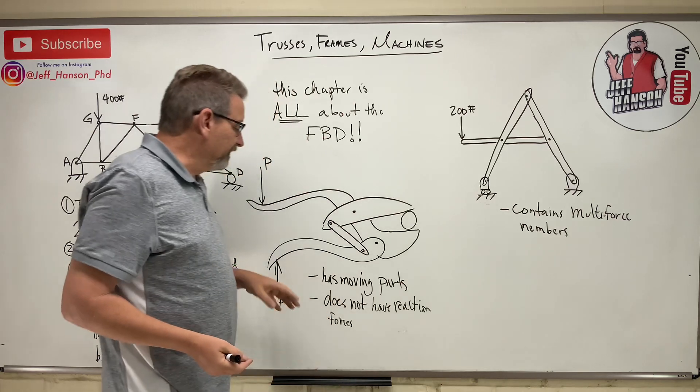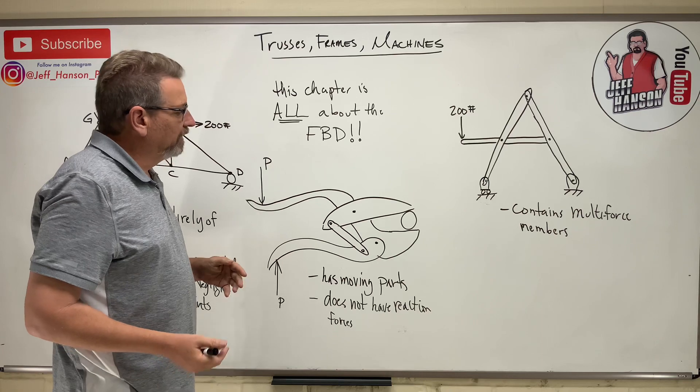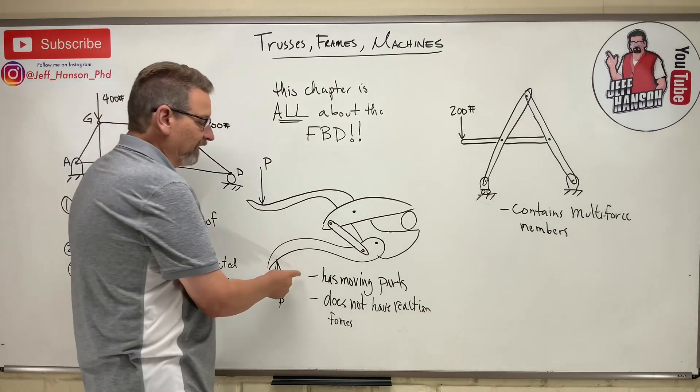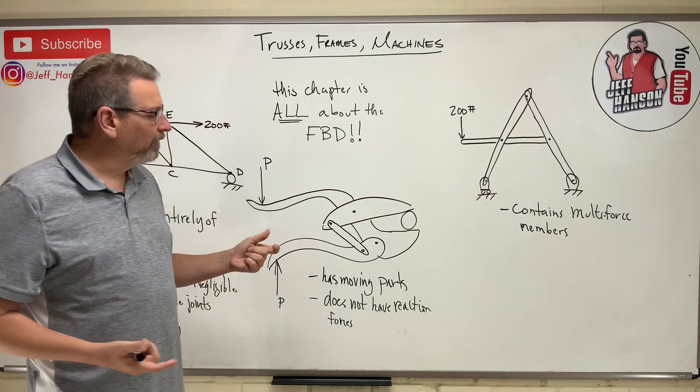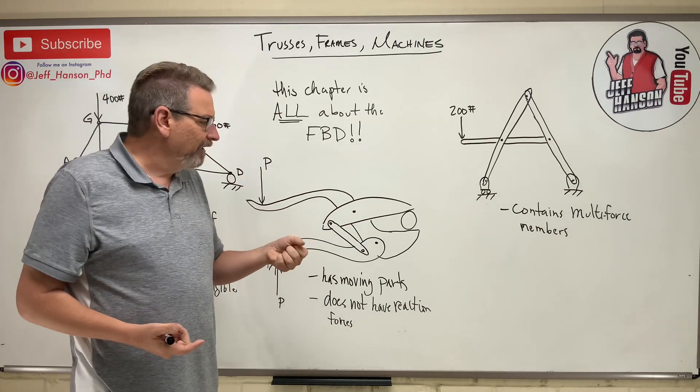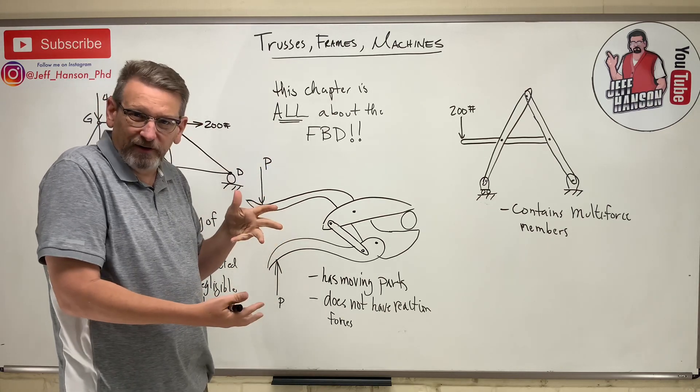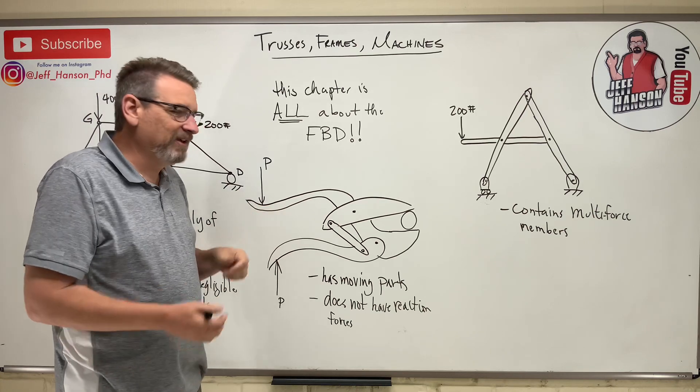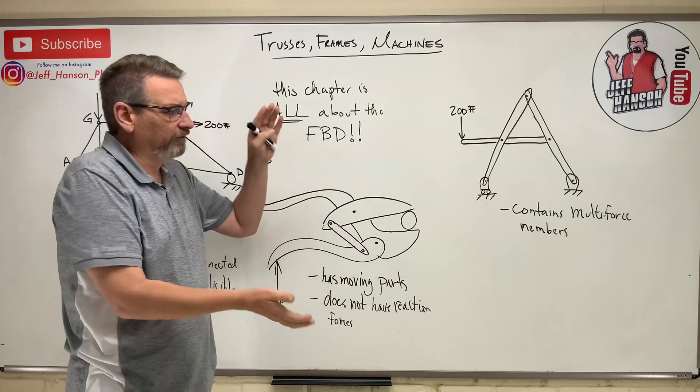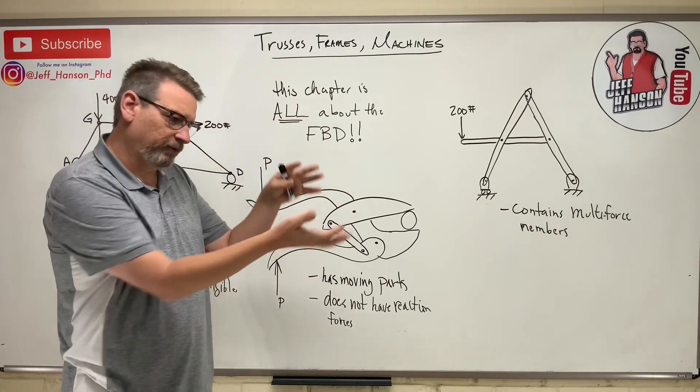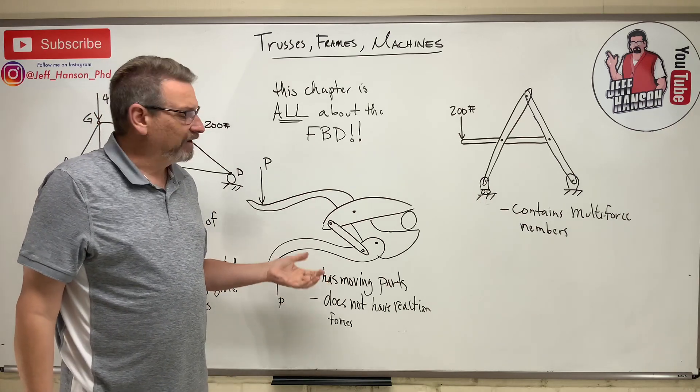And then finally, machine problems. What is a machine? A machine means it has moving parts. The quintessential machine problems are a pair of vice grip pliers, pruning shears, some bolt cutters, the plier kind of family. And then tractor arms like buckets, backhoes, front-end loaders, all that kind of stuff with hydraulic cylinders. Those are machine problems. They have moving parts.